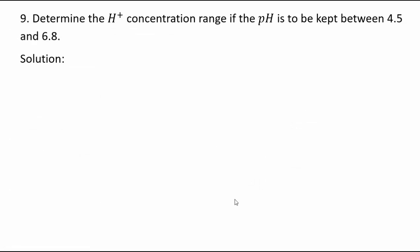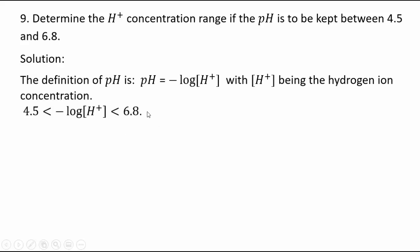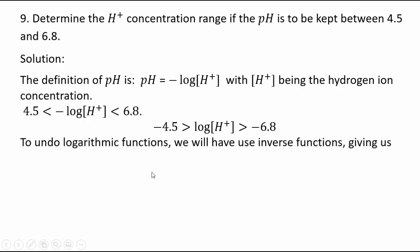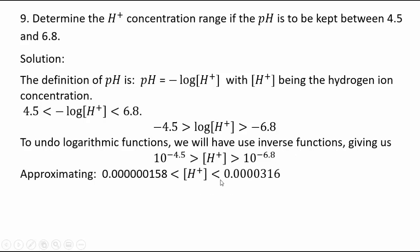Determine the hydrogen ion concentration range if the pH is to be kept between 4.5 and 6.8. Using the formula pH equals negative log of hydrogen ion concentration, we set up: 4.5 is less than negative log[H⁺] which is less than 6.8. Getting rid of the negative sign and undoing the logarithm gives: 10 to the power negative 4.5 is greater than [H⁺] which is greater than 10 to the power negative 6.8. Use your calculator to evaluate the range of hydrogen ion concentration.